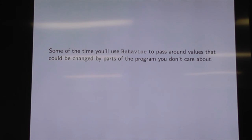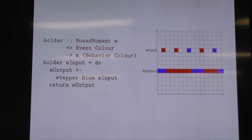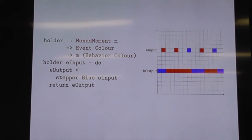We build behaviours with events. stepper starts with a value and every time the event occurs, it takes on the event's value — but in the next moment of time. So when this red event happens here, the behaviour stays blue until the very next point in time in the system. We don't observe the change as it happens — we observe it afterwards. So we start with blue and then just take on the value of our events.